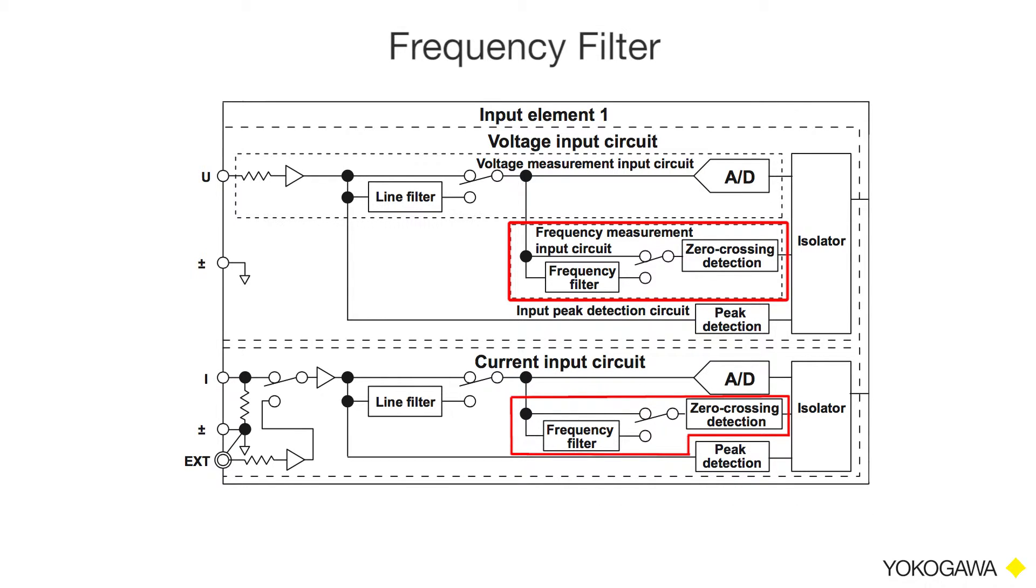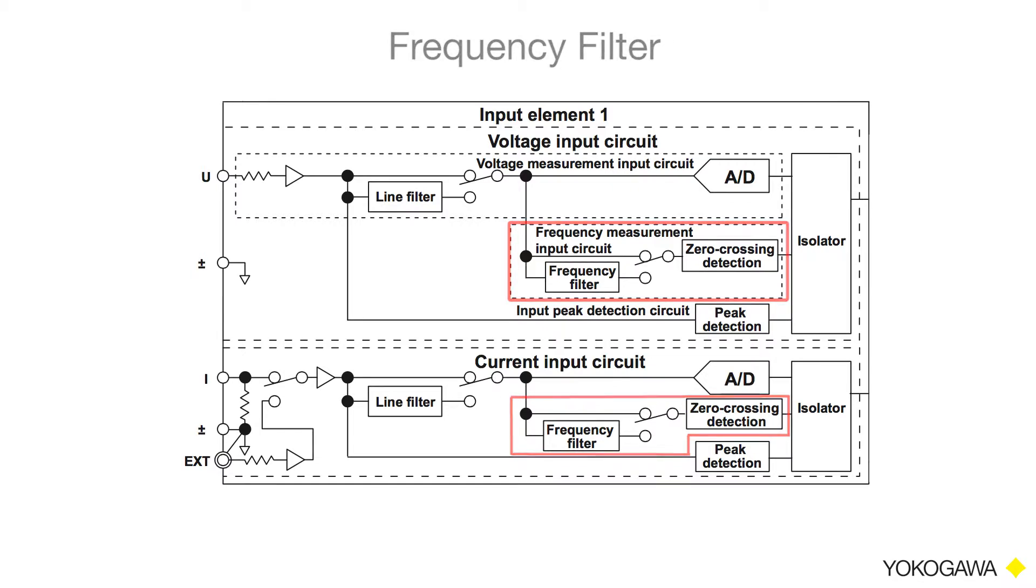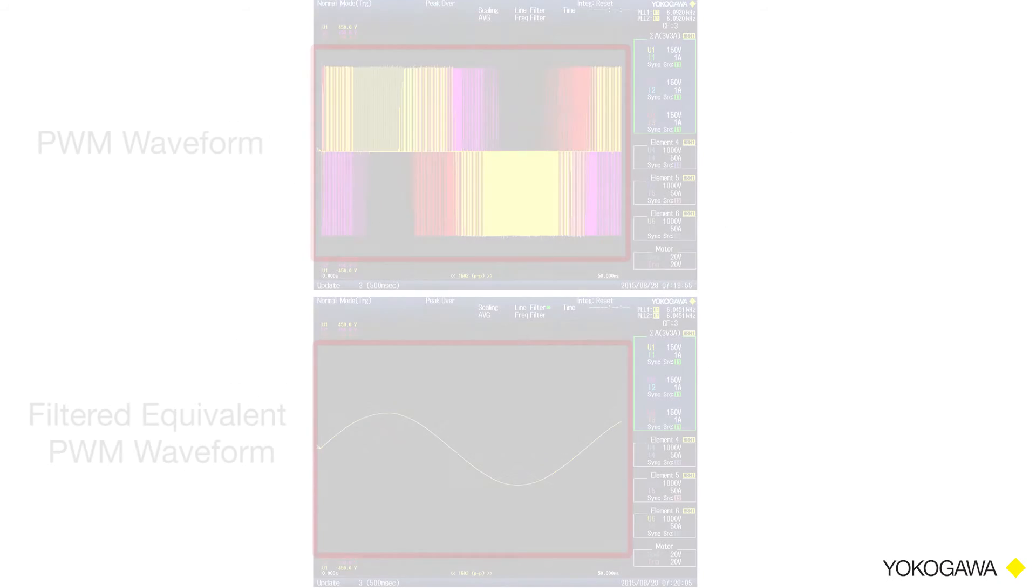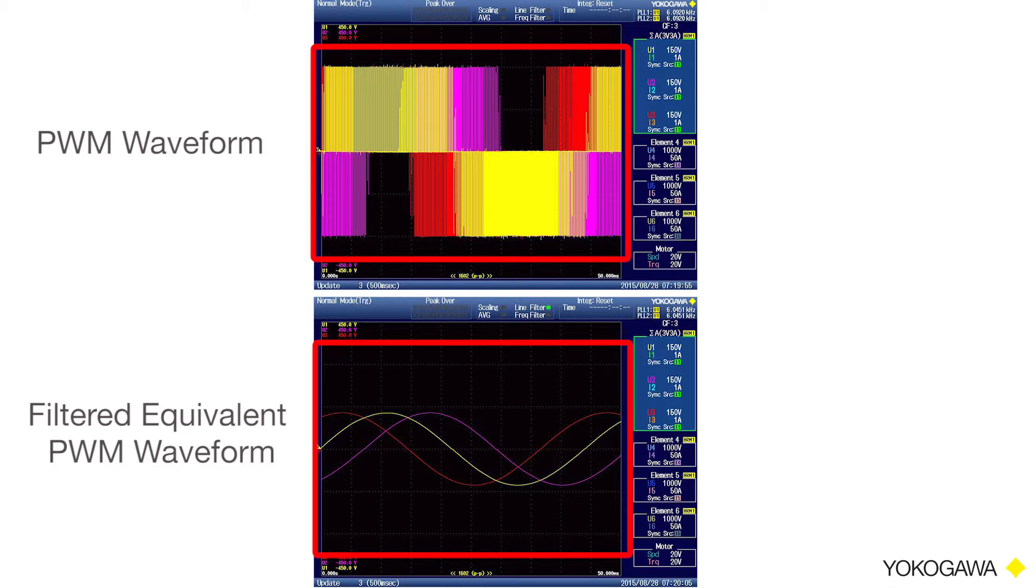A typical use of this filter comes in handy when measuring PWM signals. Since PWM signals have a fundamental frequency with high switching frequency components like this, power analyzers can sometimes struggle with locking onto the measurement period of the signal's fundamental frequency to make accurate power measurements.